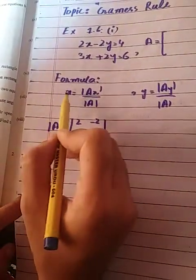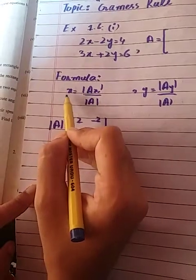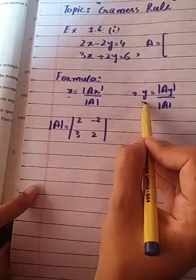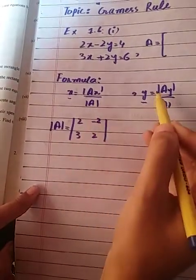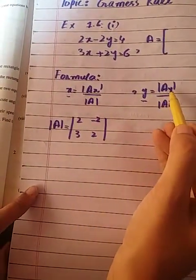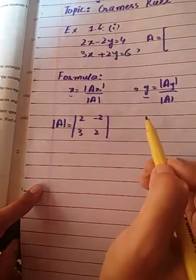There are two formulas, one for x and one for y. The formula for x is |Ax| divided by |A|, and the formula for y is |Ay| divided by |A|.